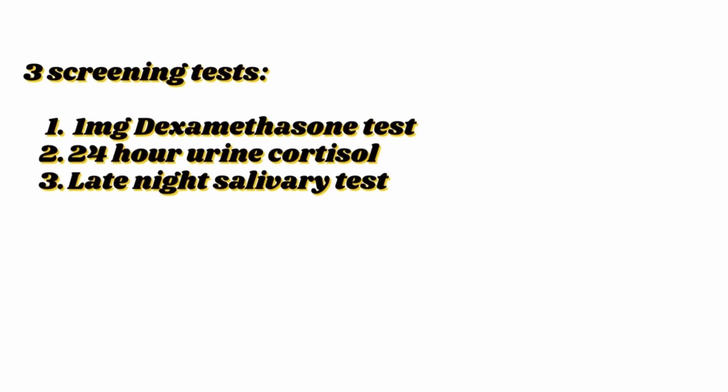From there, we proceed to blood work or urine tests, starting with a screening test. We have three major screening tests: the one-milligram dexamethasone suppression test, the 24-hour urine cortisol test, and the late-night salivary test. These three tests are very dependent on you as patients to make sure you do them correctly.